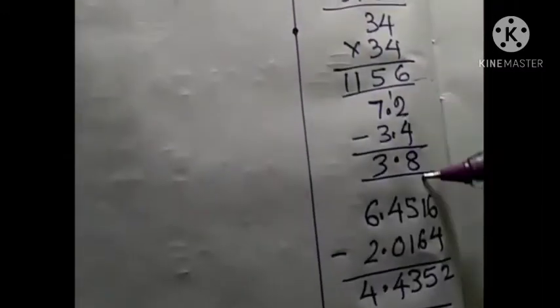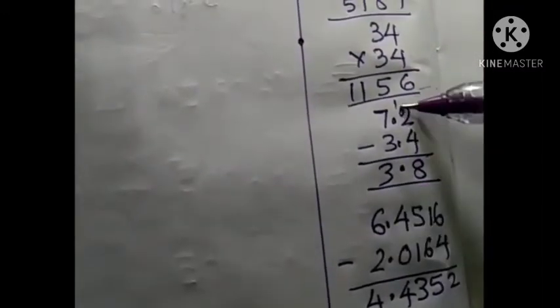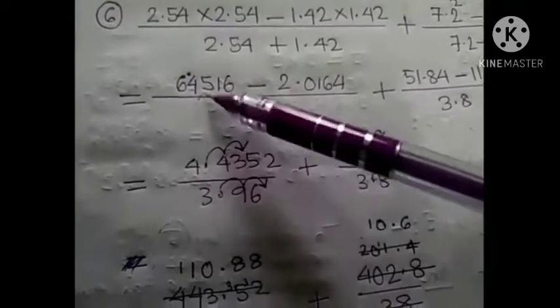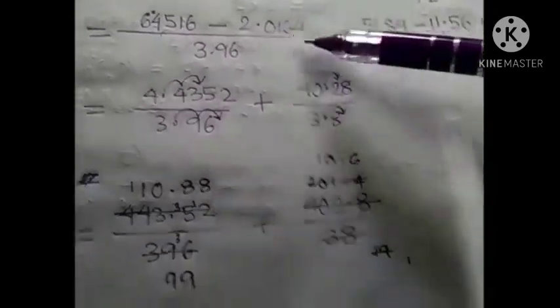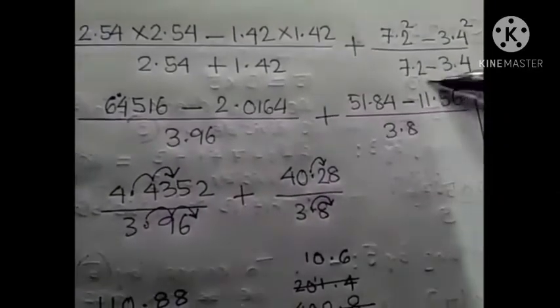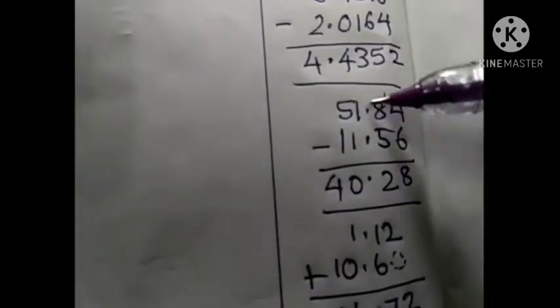For subtraction, we need the decimals to be placed one below the other. Subtract in the regular way, carry one — it is 12. Subtract, we need 3.8. For the next step we subtract again; you will need the rough, don't skip it. Place the decimal one below the other and subtract. For the next numerator also, place the numbers with the decimals just one below the other and get the subtraction value.